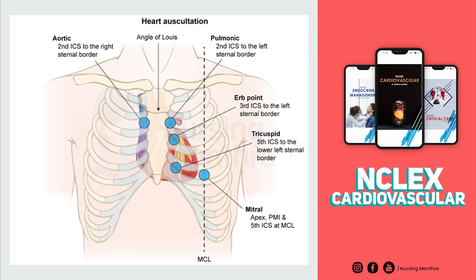The angle of Louis, then the pulmonic area at the second intercostal space to the left sternal border. Then Erb's point, that is the third intercostal space to the left sternal border.